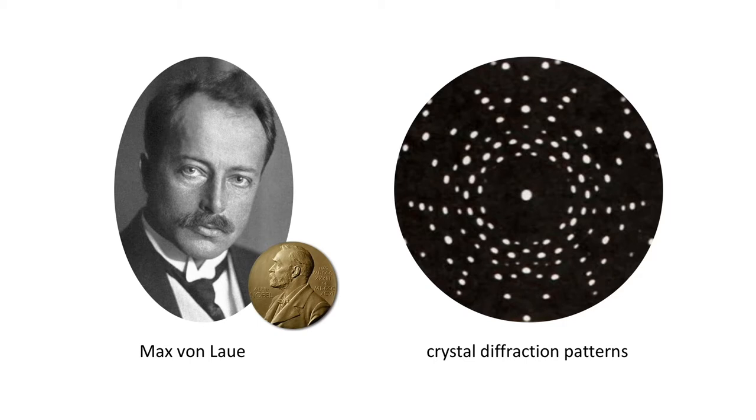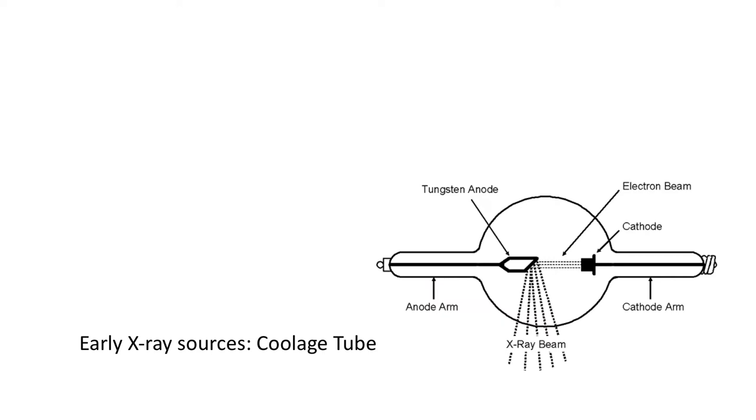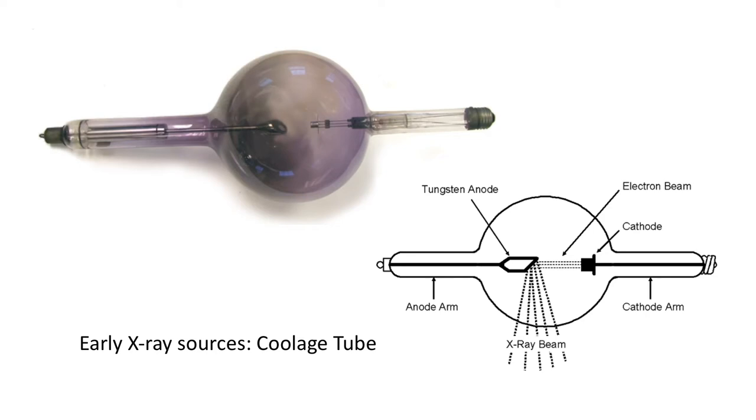For many decades, the main limitation in observation of structures even smaller than crystalline ones, such as molecules and atoms, was availability of very intense X-ray sources. The first designs for X-ray sources were based on a discharge lamp, which were quickly improved and named Coolidge tubes. Electrons were emitted from the cathode onto the anode, resulting in the production of X-rays. The power output of these tubes, however, was rather low.